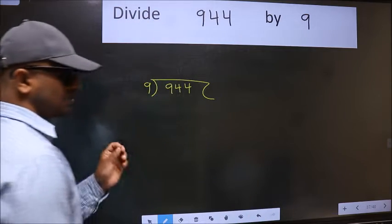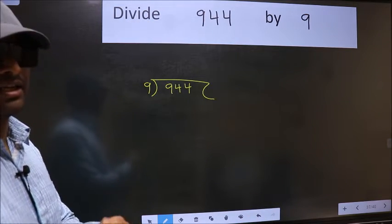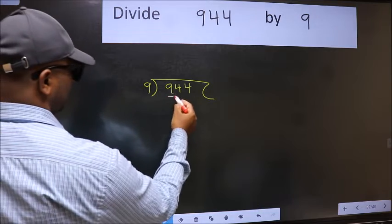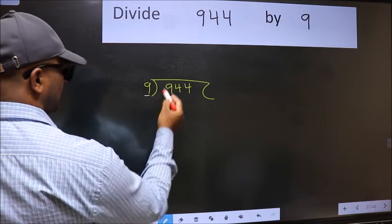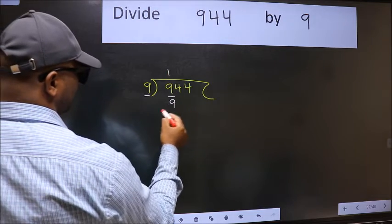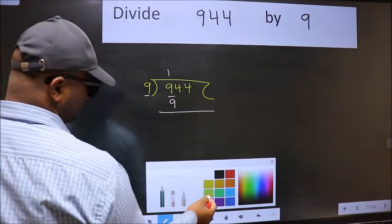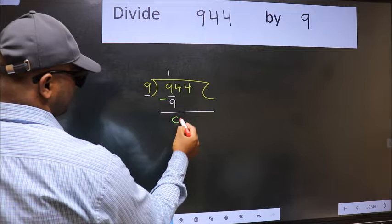This is your step 1. Next, here we have 9 and here 9. When do we get 9 in 9 table? 9 once 9. Now we should subtract. We get 0.